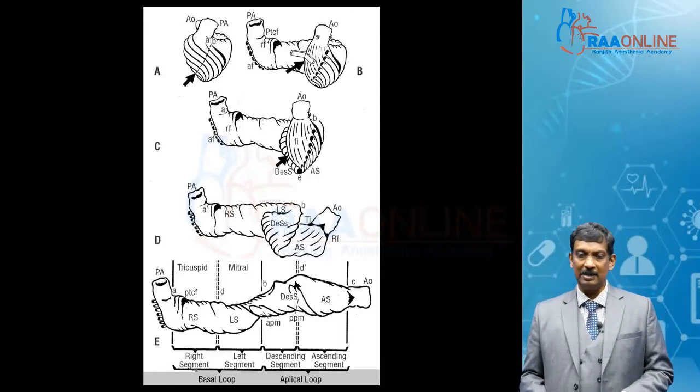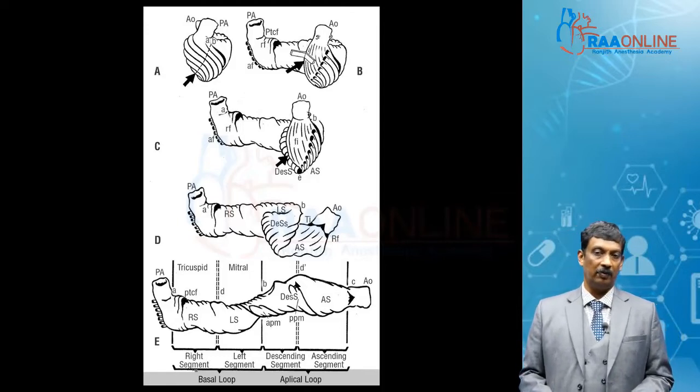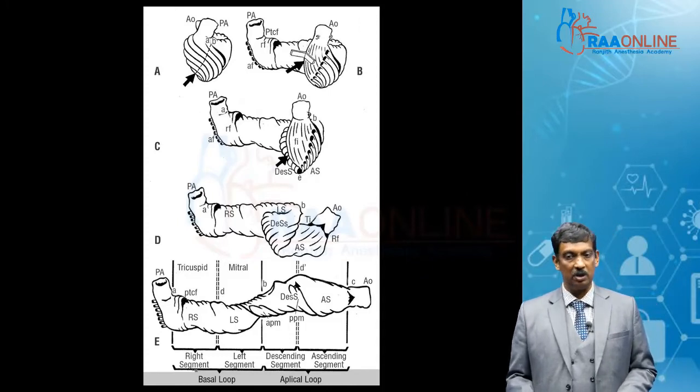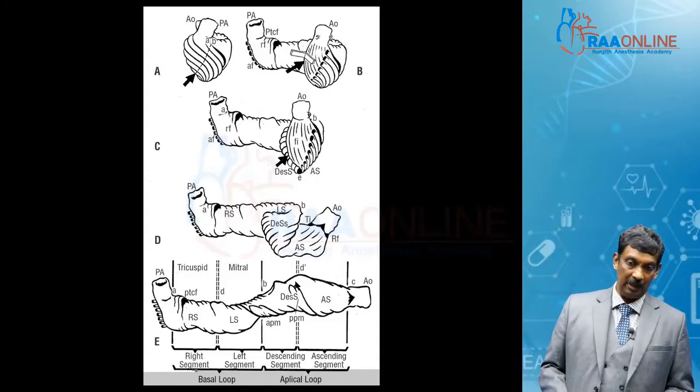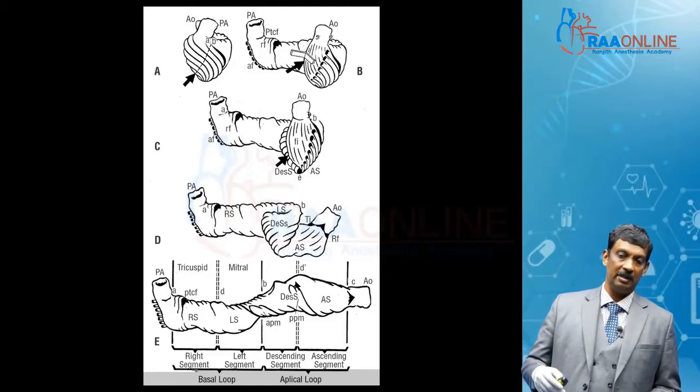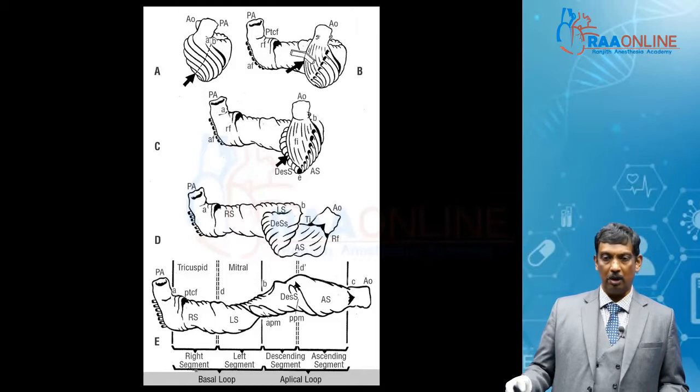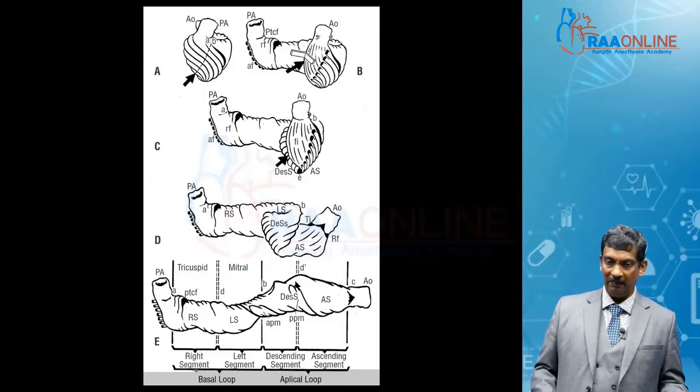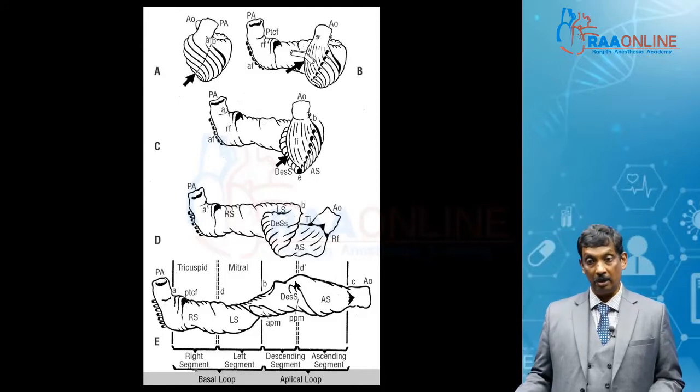The apical segment is the outer layer of the left ventricle. The right ventricle has one layer, the left ventricle has two. This apical loop has a descending segment going around the apex and an ascending segment finishing at the aortic valve. We start from the pulmonary valve and go to the aortic valve.